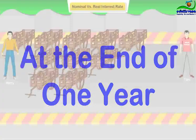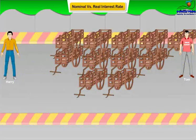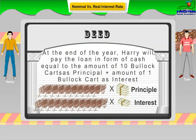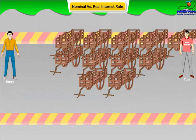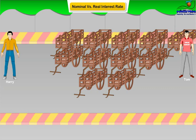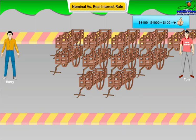At the end of one year, Harry returns the agreed eleven bullock carts to Tom. Next time, Harry wanted to do the same thing — he wanted to borrow ten bullock carts from Tom at the rate of ten percent interest. The only difference is, this time, he proposed repaying the loan in money rather than in bullock carts. They ascertained in the market that each bullock cart costs $100, so ten bullock carts would cost $1,000, and Harry would return $1,100 this time instead of eleven bullock carts. Tom, though it sounded fine, agreed to the deal.